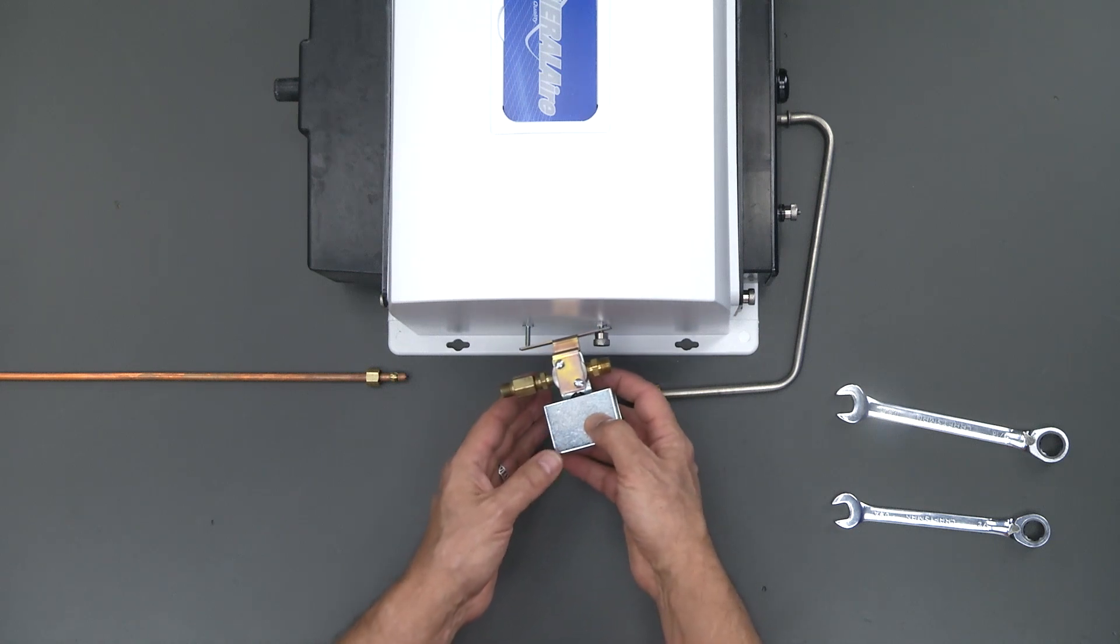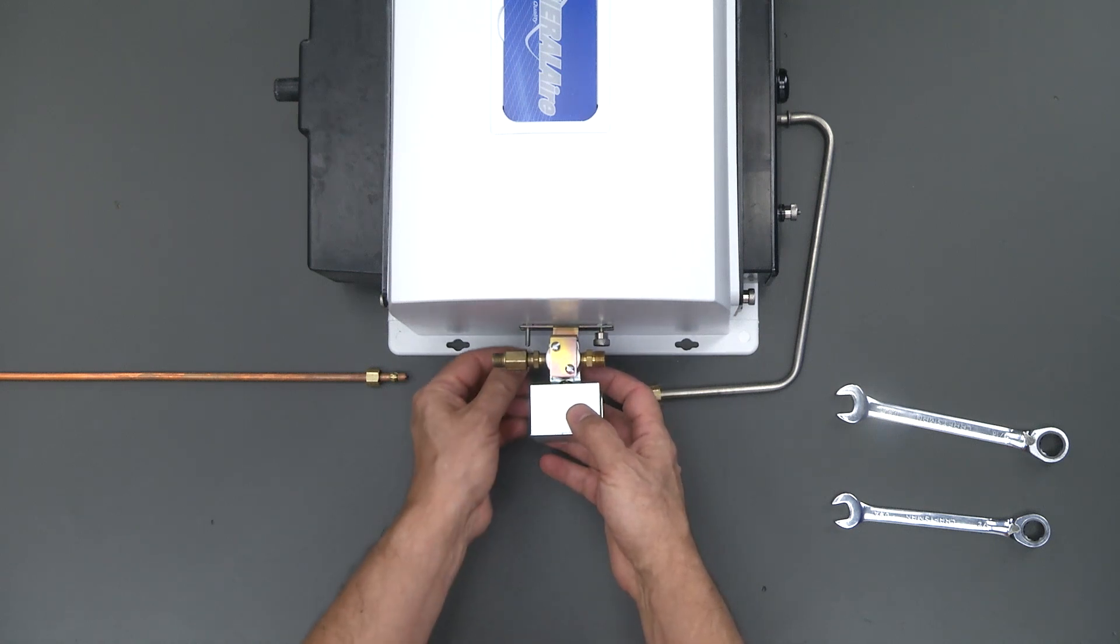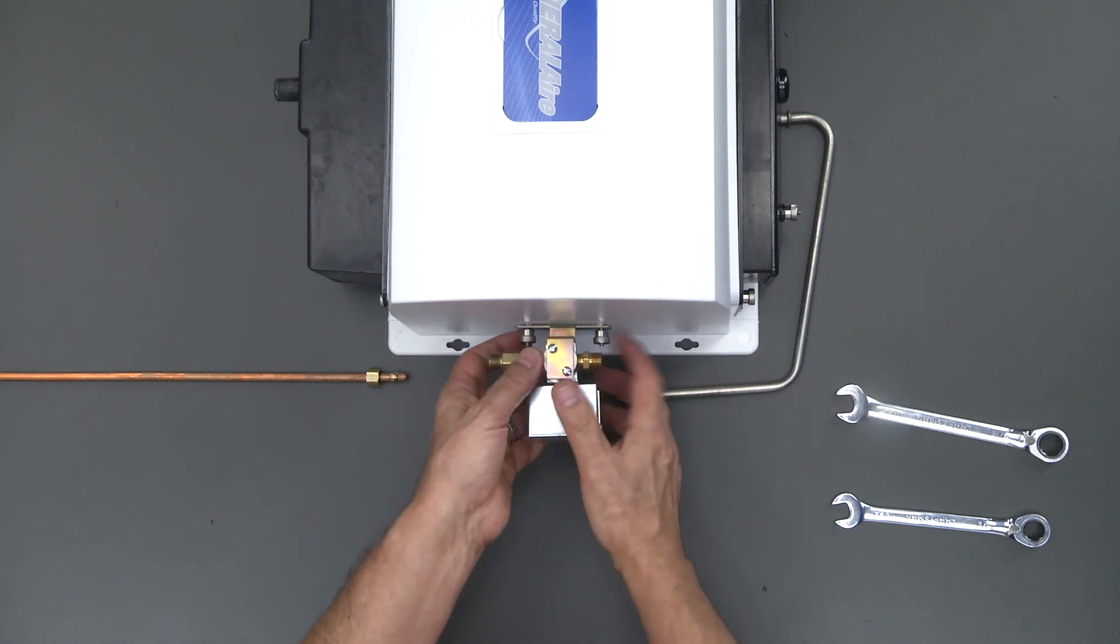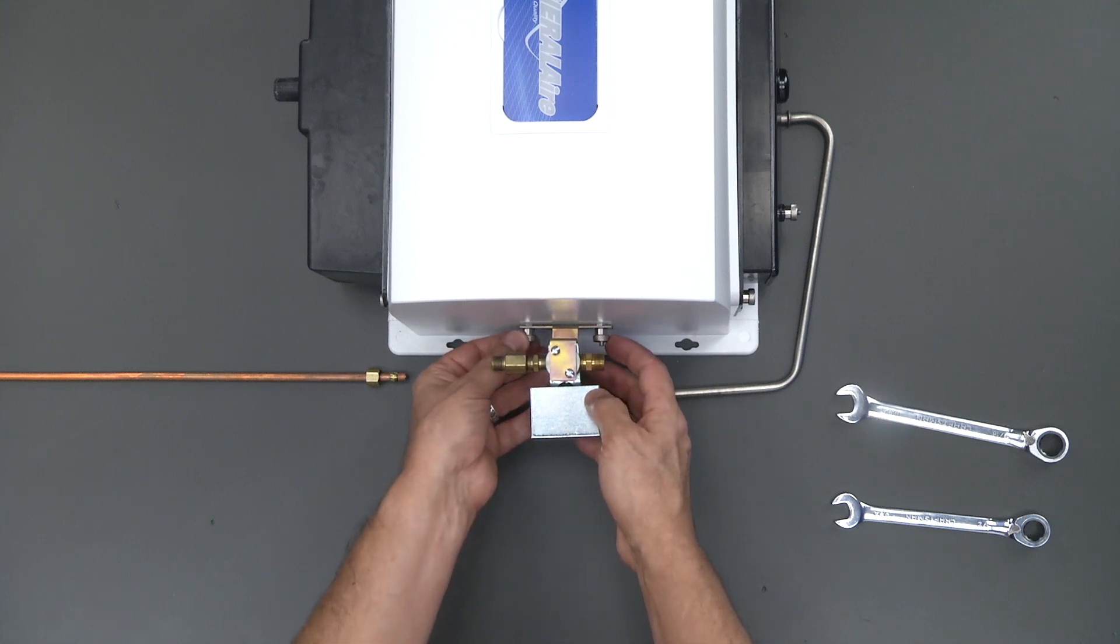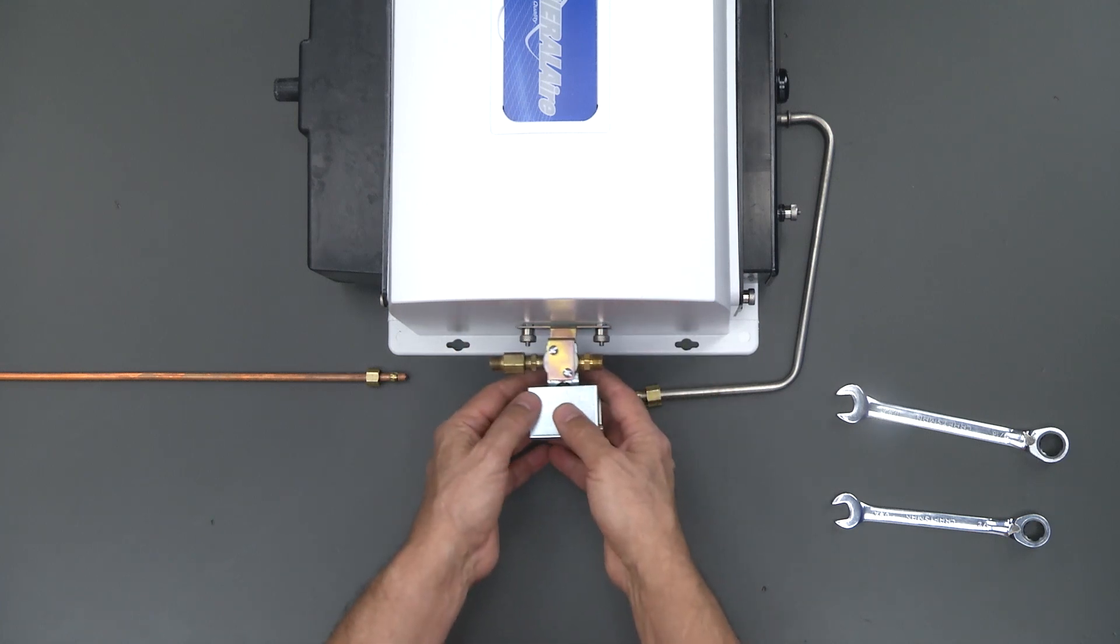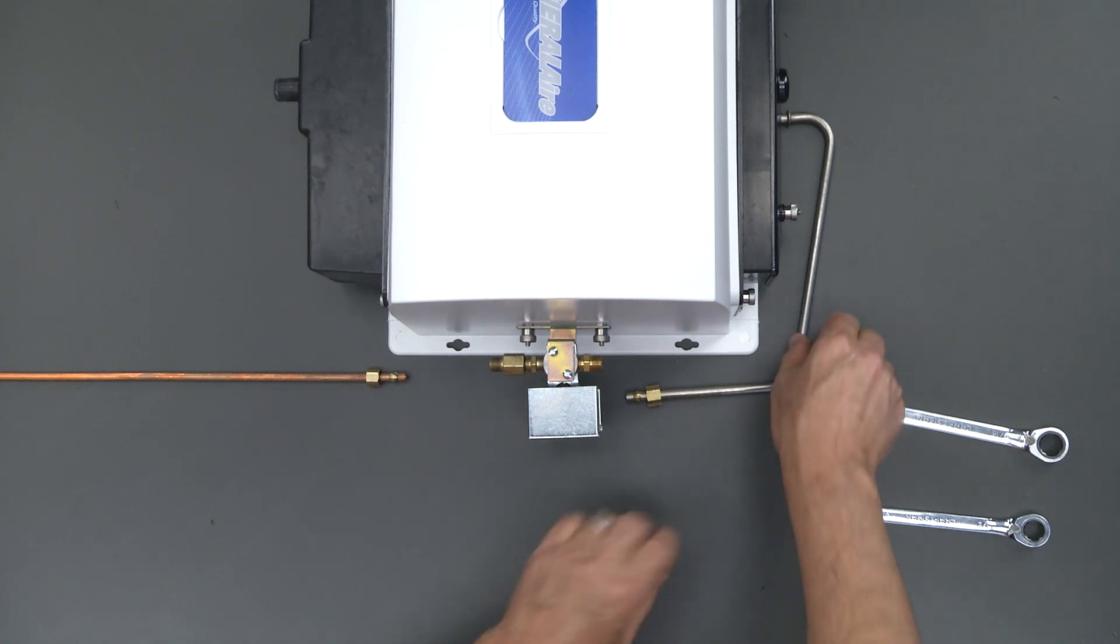So let's mount the valve. I'm going to leave that valve a little loose so we can slide it back and forth so we can get our alignment right with the other components.